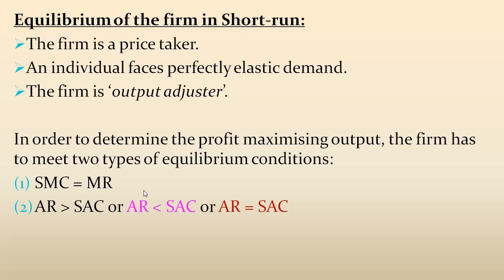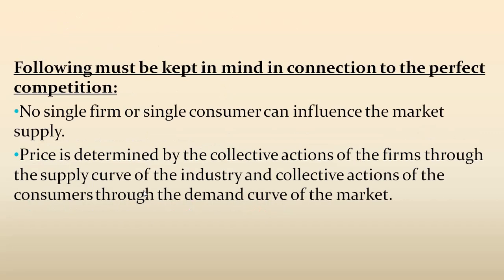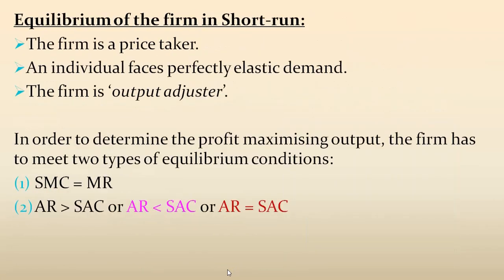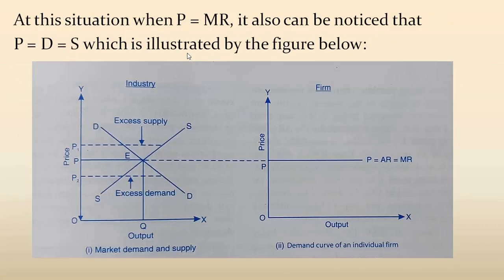There are three more important points to know. First: the firm is a price taker. Remember we are talking about the short run in a perfectly competitive market. In this Chapter 11 we will discuss perfect competition only — imperfect competition is not in our syllabus for this year. In a perfect competition in the short run, the firm is a price taker — the firm will not decide the price. Price will be decided through market mechanism.